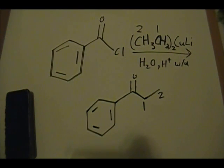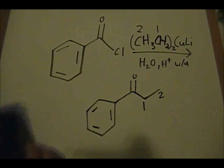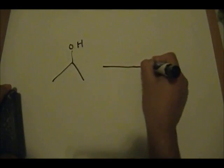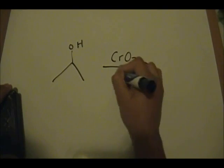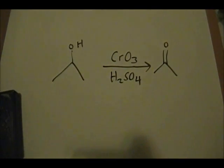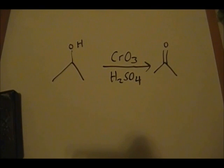There are other methods as well — one more worth knowing: reacting a secondary alcohol with CrO₃ and H₂SO₄ yields a ketone. Overall, these are some of the most important methods you should be familiar with for preparing aldehydes and ketones. I hope you enjoyed and learned something. This is Mobile 12, signing out.